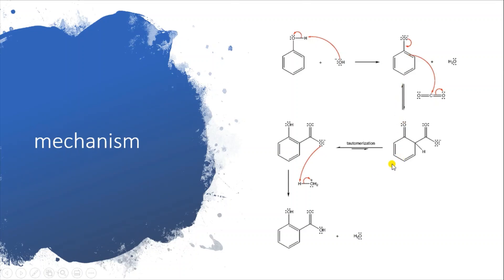Either you have a strong electrophile or a strong nucleophile — both ways, the rate of the electrophilic substitution reaction will be enhanced. The phenoxide pushes the pi electrons of the benzene ring toward CO₂. Tautomerization can occur to reform phenol and regain aromaticity, followed by a simple proton abstraction step from the acid, giving the carboxylated product.